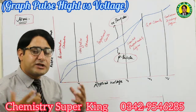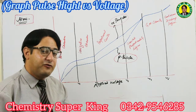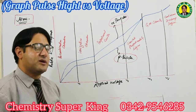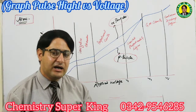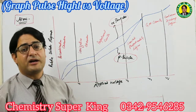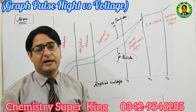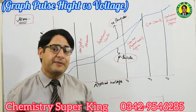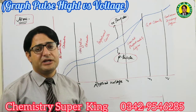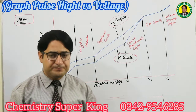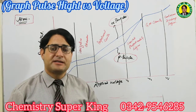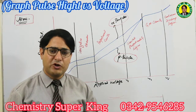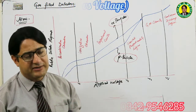Sometimes an exam question asks you to describe the graph of the gas ionization detector — just describe these regions. If you haven't subscribed to my channel 'Chemistry Super King,' please subscribe, especially if you are an analytical chemistry student. Share the video, ask questions in the comment section. That's all for today — inshallah see you next time. Stay at home, stay safe. Thank you very much.